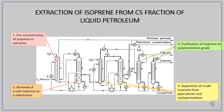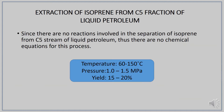The second process mentioned before is extraction of isoprene from the C5 fraction of liquid petroleum. Firstly, the mixture undergoes extraction with water acting as solvent. In an extractive distillation column, the crude isoprene is obtained as a sidestream product. The crude isoprene then moves to another series of extractive distillation columns where it is separated from piperylene and cyclopentadiene. Thus, isoprene is purified to polymerization grade in a distillation column. Since no reactions are involved, there are no chemical equations for this process. The temperature is 60 to 150 degrees Celsius, with pressure of 1 to 1.5 megapascal and a yield of 15 to 20%.